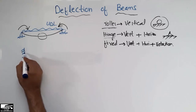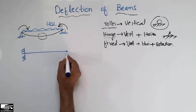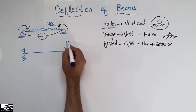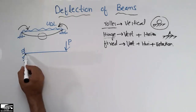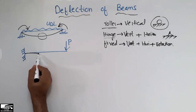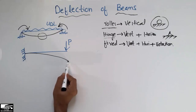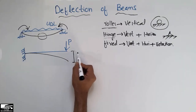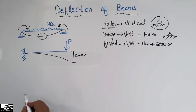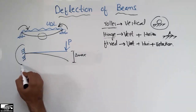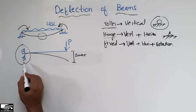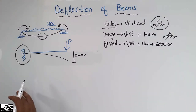Now let's consider the cantilever beam with a point load P acting at the free edge of the beam. The deflected shape for this beam will look like this, with the maximum deflection seen at the free end.